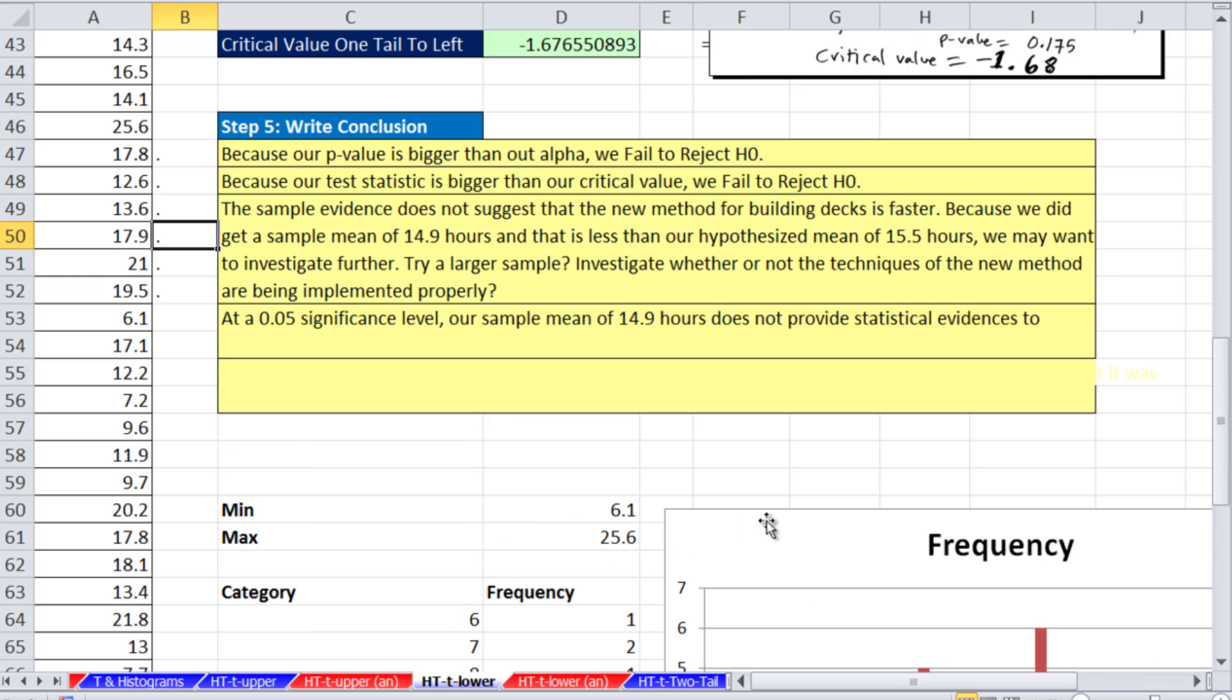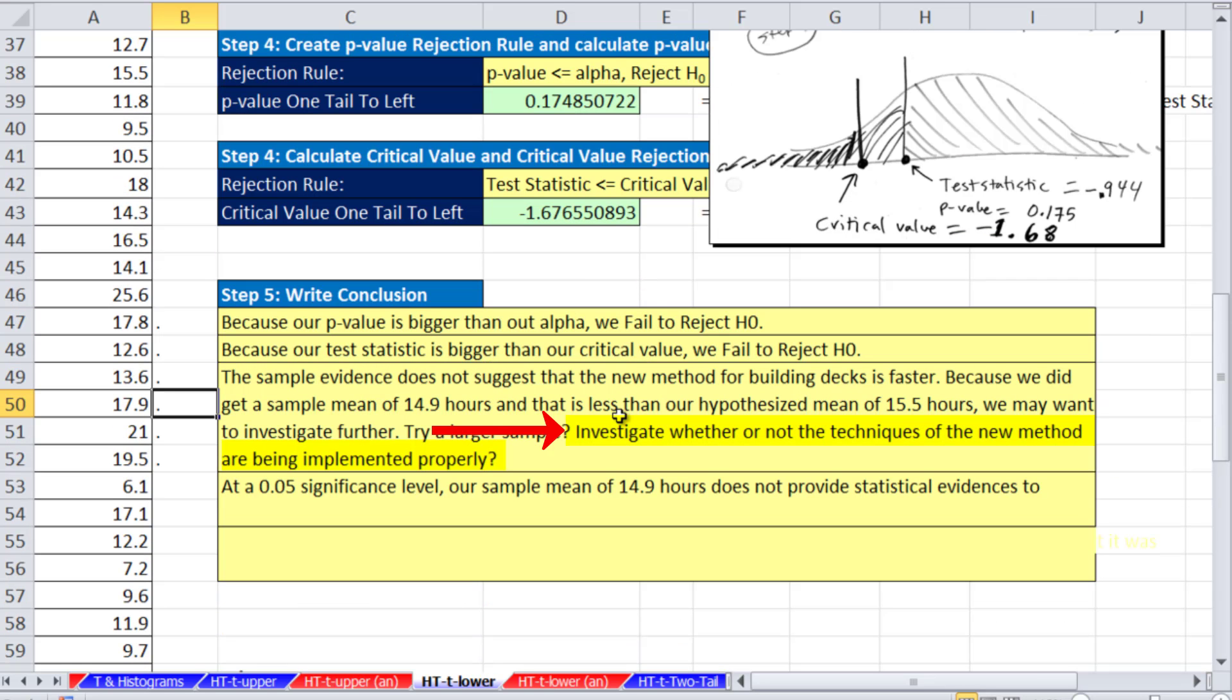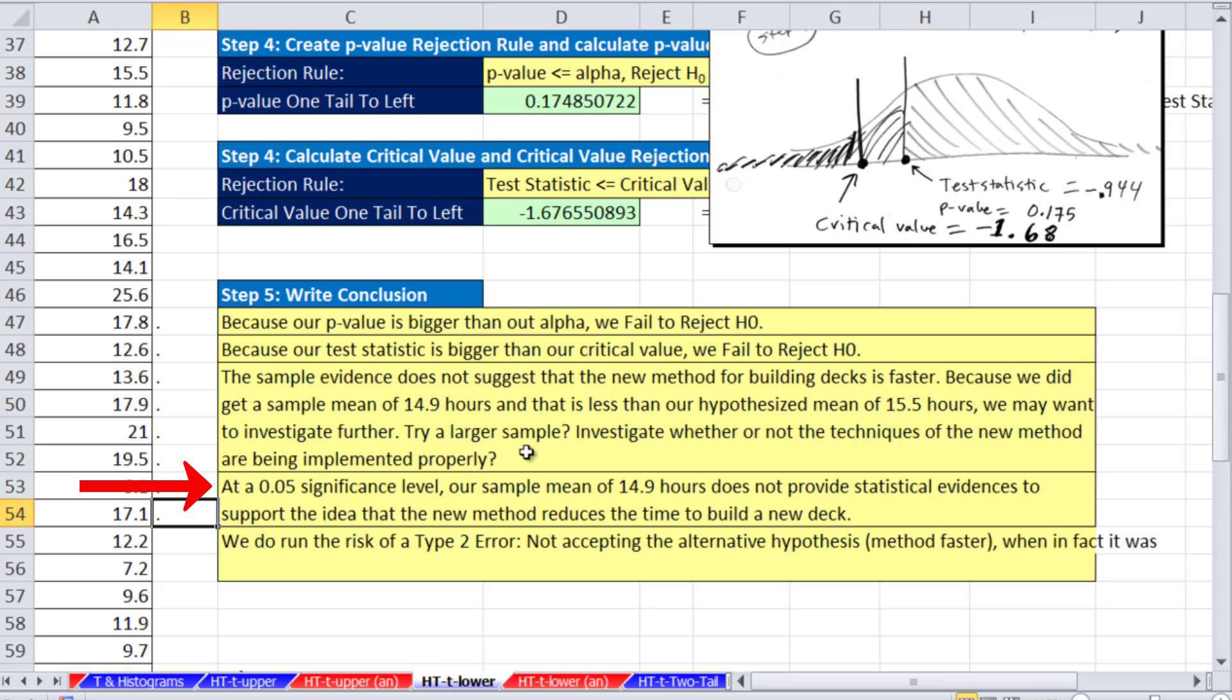I went ahead and plotted this, and maybe there's kind of a shape here. There's looks like there's one way out here. Maybe we want to increase the n, try a larger sample. Also another possibility here is investigate whether or not the techniques of the new method are being implemented properly. So maybe there's this great new method, and it really should reduce the time, but we went out and ran the sample. It's not happening, so now we need to investigate further. At 0.05 significance level, our sample mean of 14.9 hours does not provide statistical evidence to support the idea that the new method reduces the time to build a new deck.